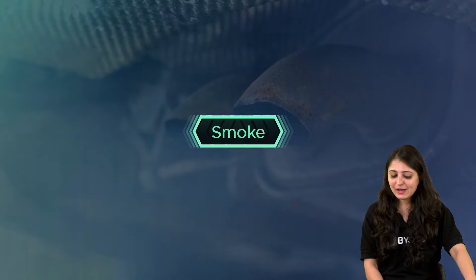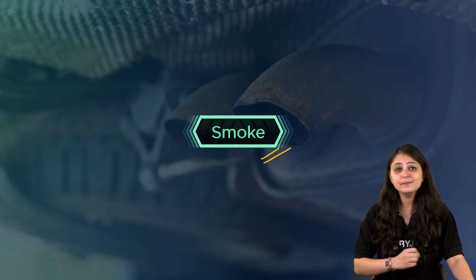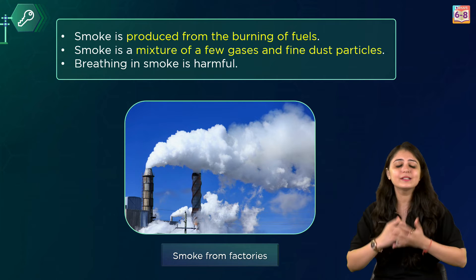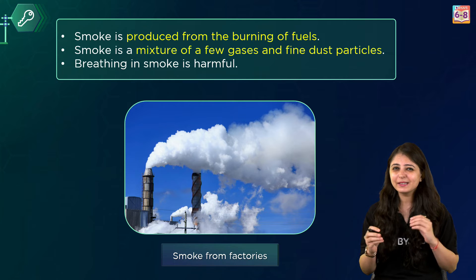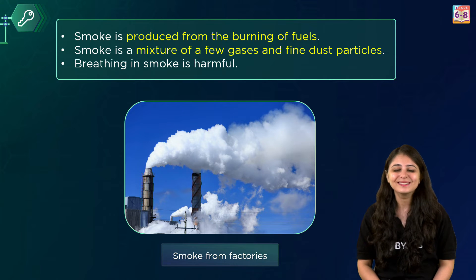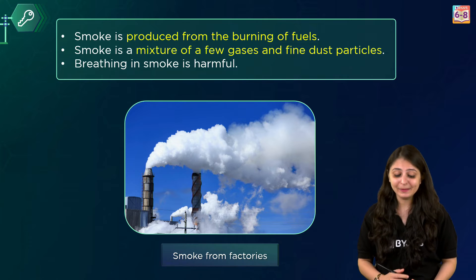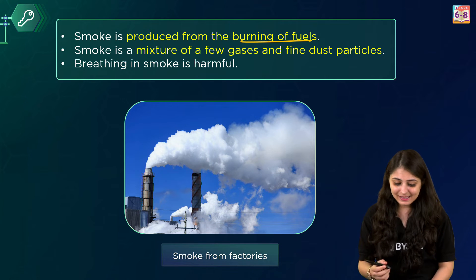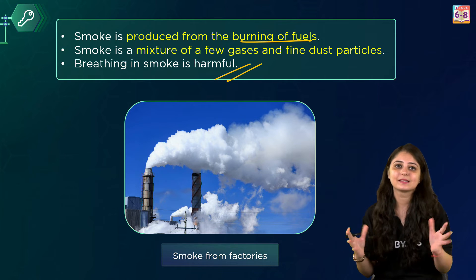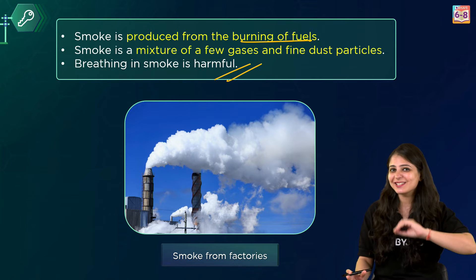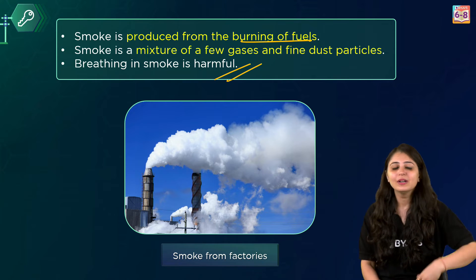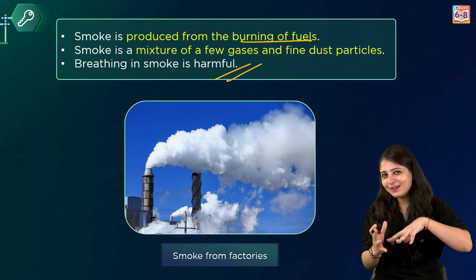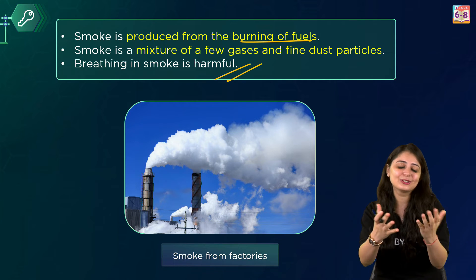Next we have smoke. Imagine you have a campfire and you put a piece of wood in it. As the wood burns, you might see something rising up in the air — that is smoke. Smoke is produced from the burning of fuels; it's a mixture of gases and fine dust particles. Breathing smoke is harmful for us. Smoke can be of different colors — white, grey, or even black — depending on what's burning.